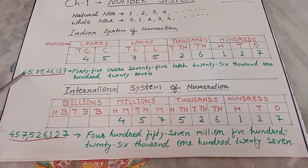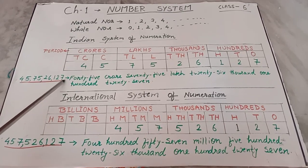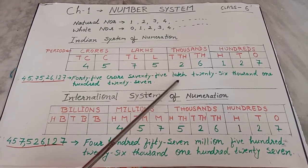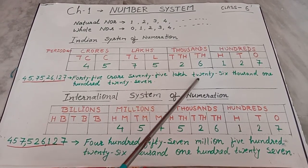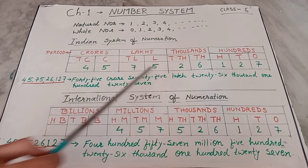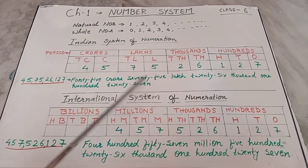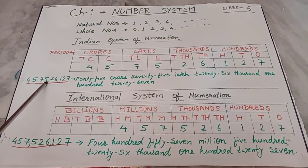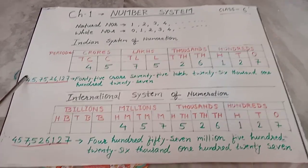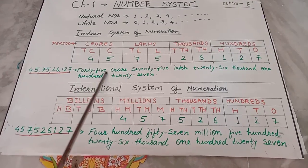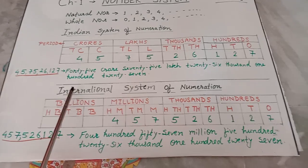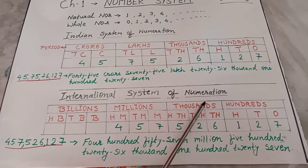In words you can write this as shown. In the Indian system of numeration, you write this large number as 45 crore, 75,26,127. After each period you give a comma when writing in numerals, and in words it is written as shown.